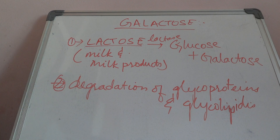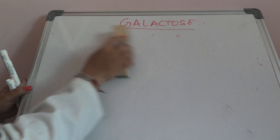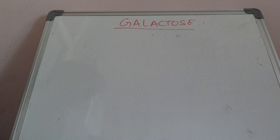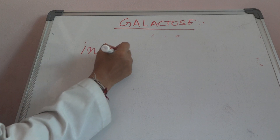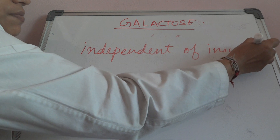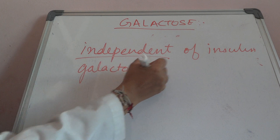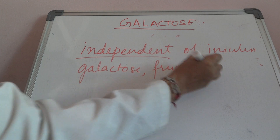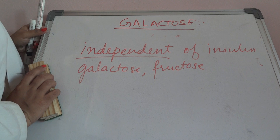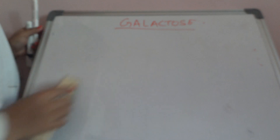The most important thing to remember is that fructose and galactose entry into the cell is independent of insulin. They are not dependent upon insulin. So the sources for galactose are lactose and the degradation of glycolipids and glycoproteins, and the entry of galactose and fructose is independent of insulin.